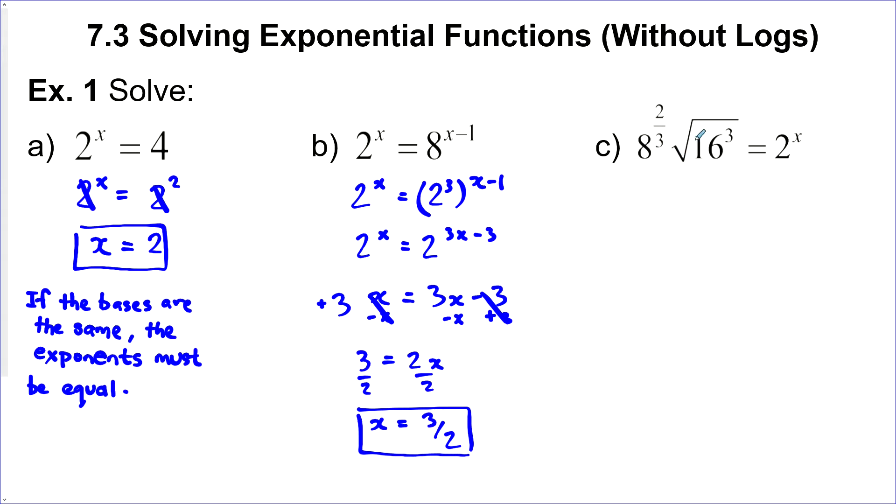Now, the last question looks very complicated, but 8 and 16 can both be written with base of 2, so let's do that. The first 8 we already saw is 2 to the power of 3. Leave this exponent here, so this is still 2 thirds. 16 can be 2 to the power of 4. Now, it's got an exponent of 3, and we don't want this radical here, because that really will mess up things. We want everything in exponential form, so we can add them and subtract them as we need. So, remember that the index of the radical is the denominator of the exponent. And then on this side, just 2 to the power of x.